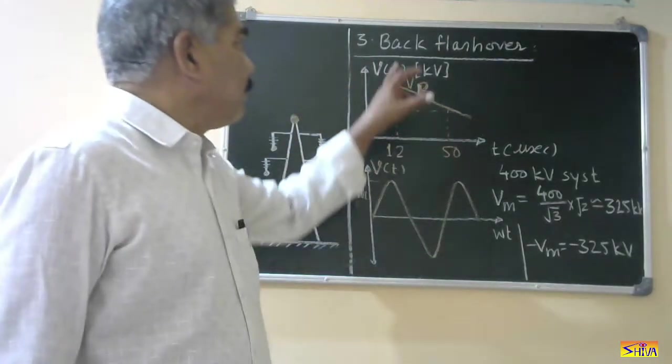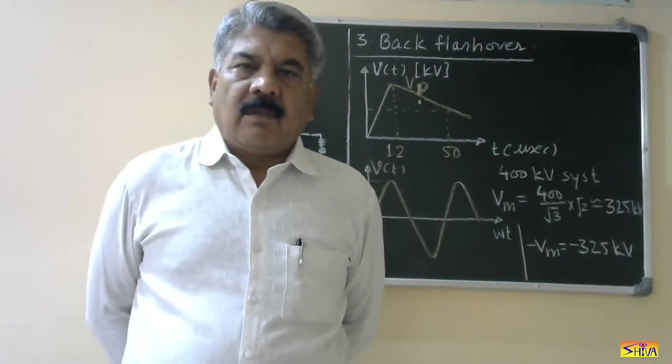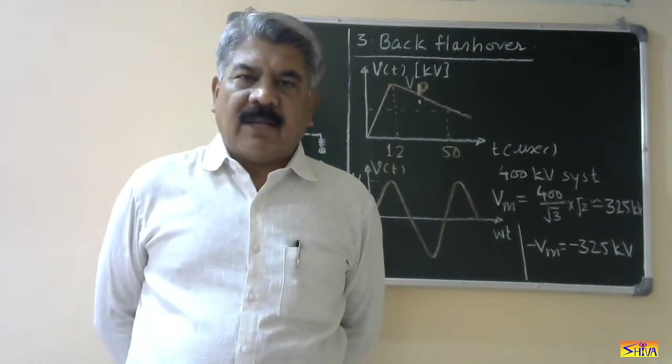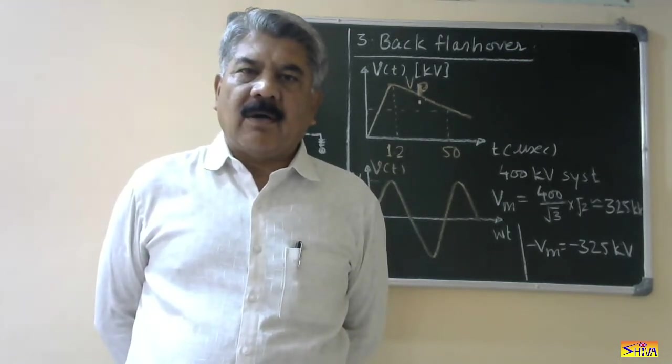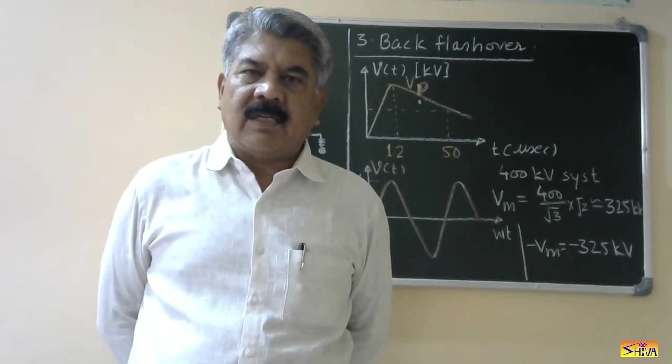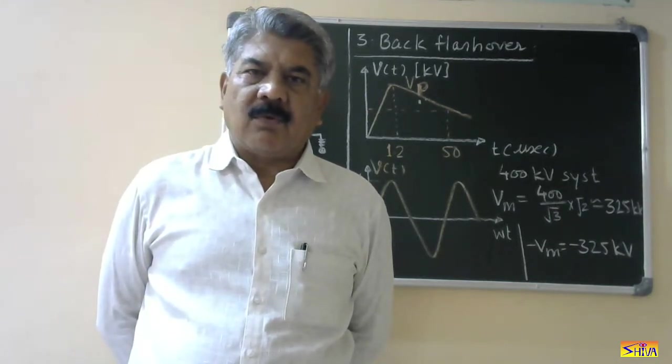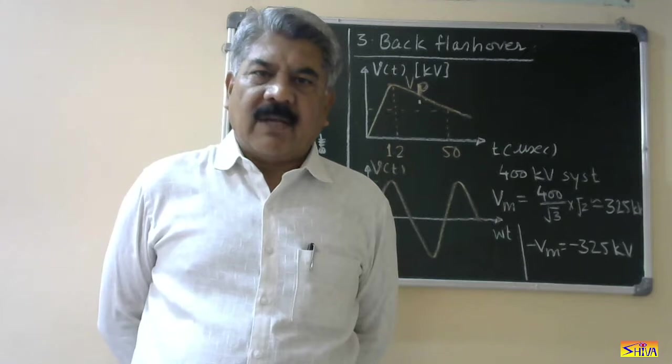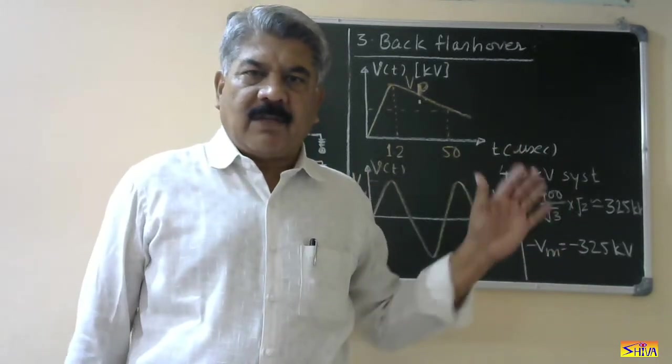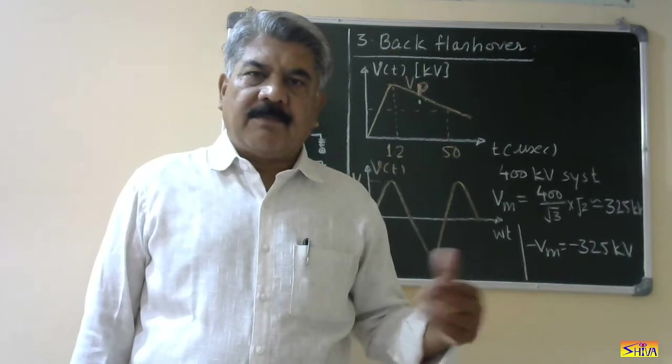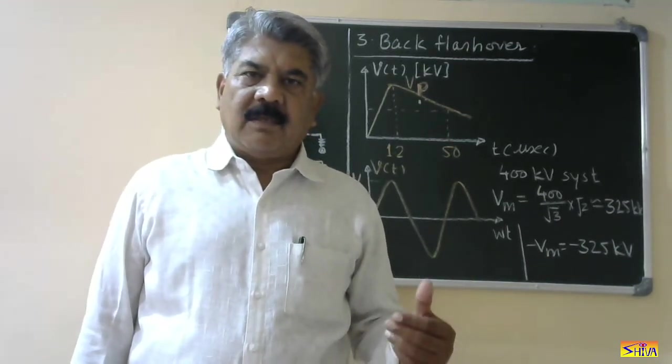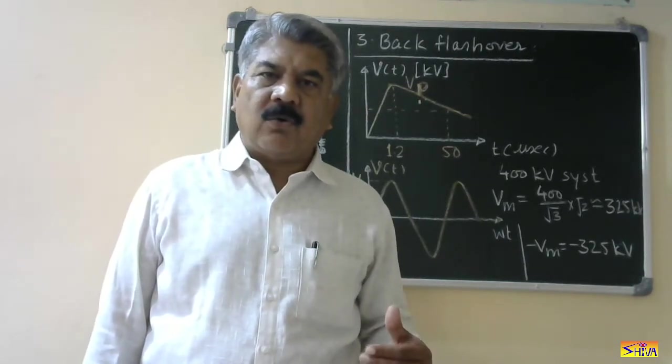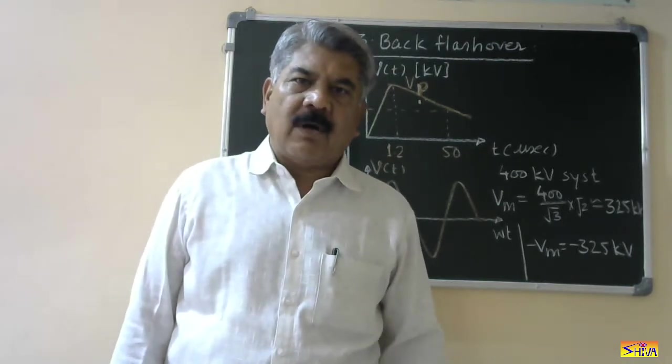Next term is backflash tower. Now so far we have understood what is flashover. Flashover means the power conductor or the electrode which is connected to the high voltage discharges to the ground. That is flashover. We observe a flash, therefore we call this as flashover. Now what is this backflash tower? Obviously back means it is reverse process. Reverse process means the flashover is from ground or earth conductor or electrode to the power conductor. Now let us see how it happens.